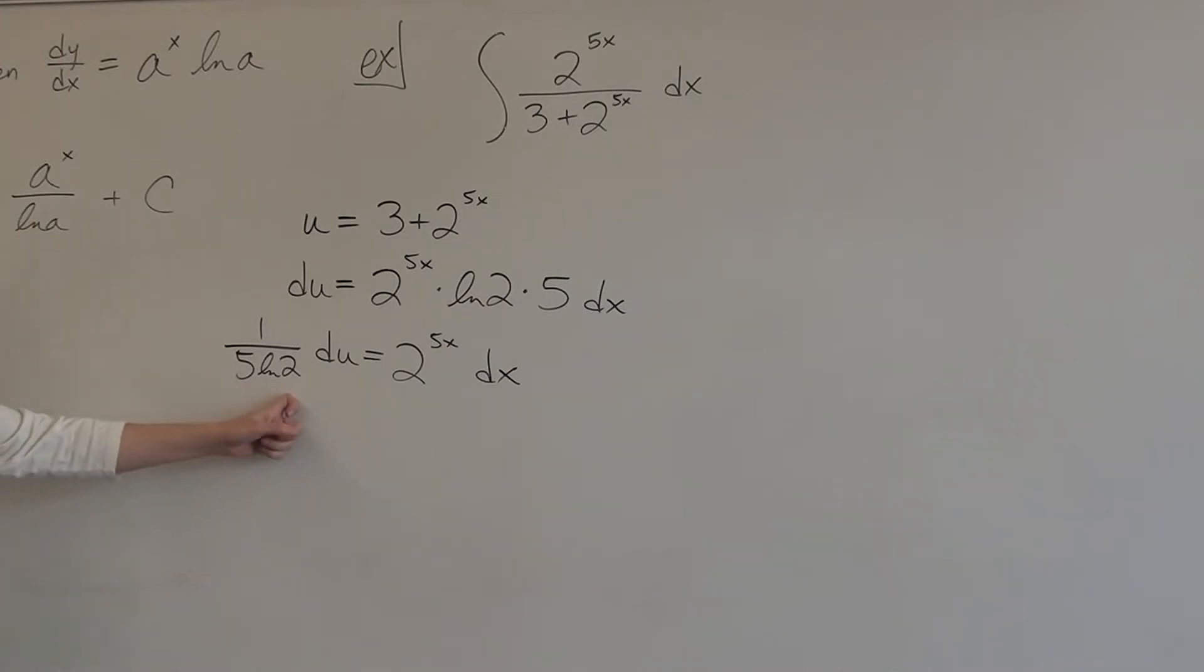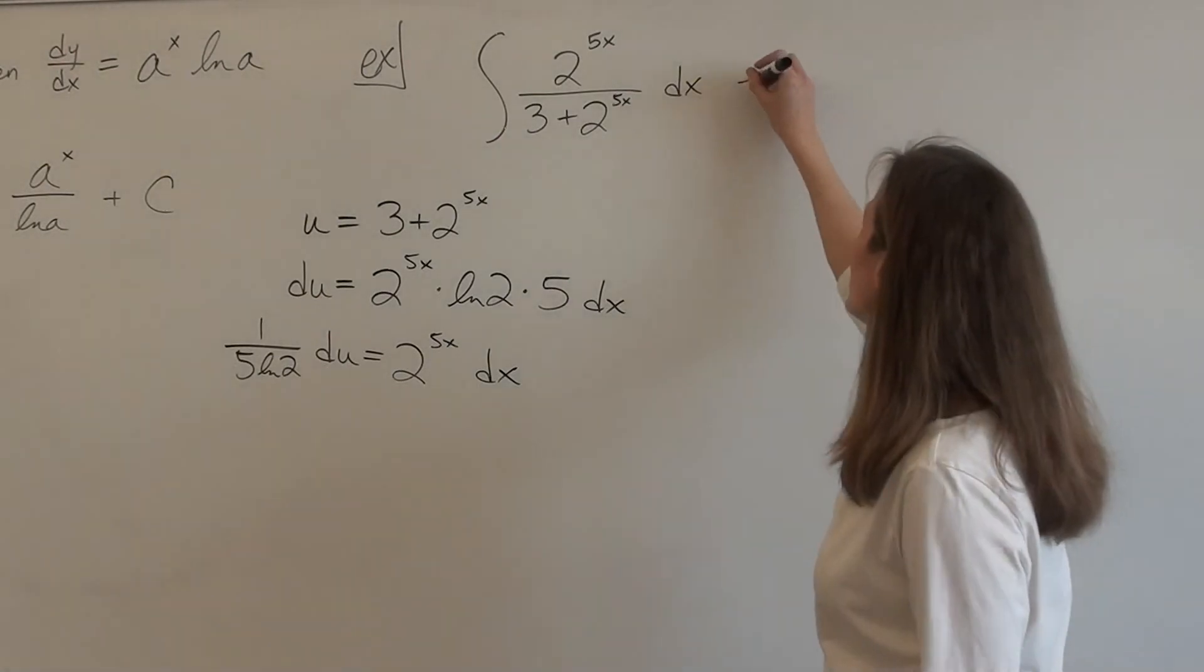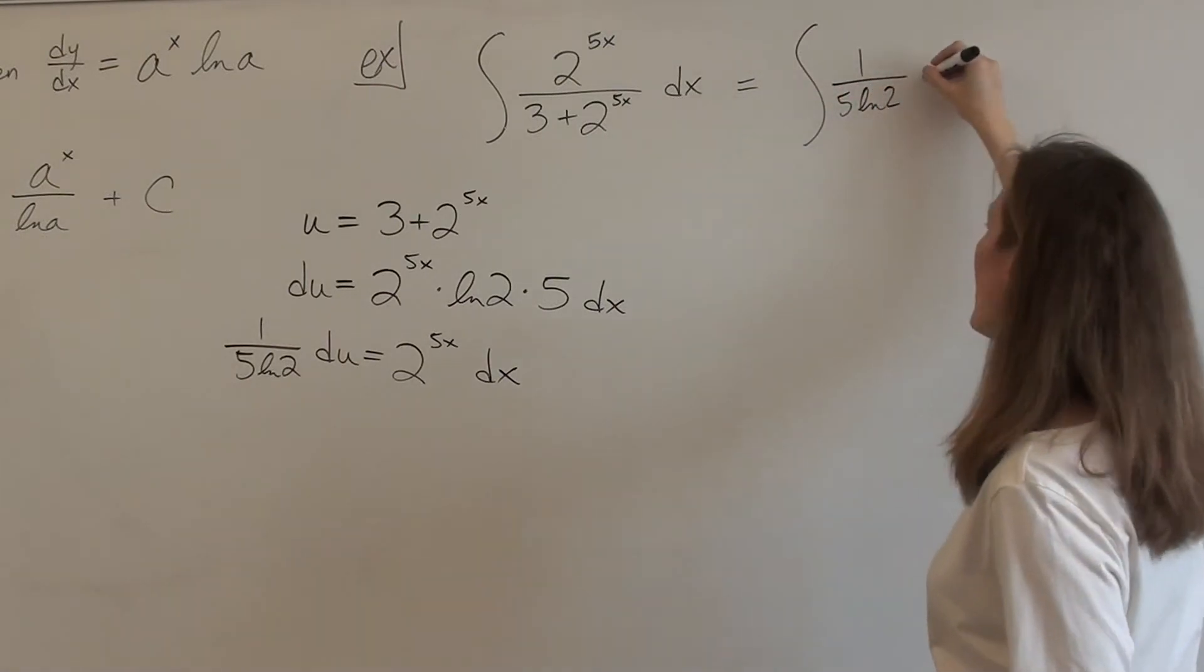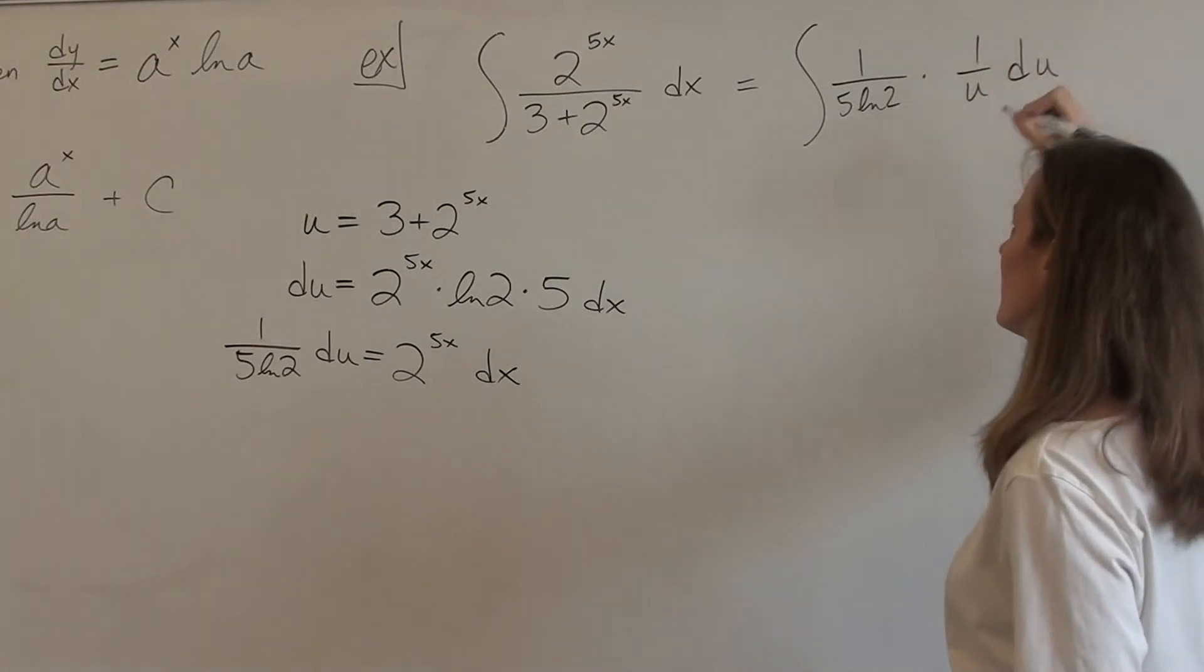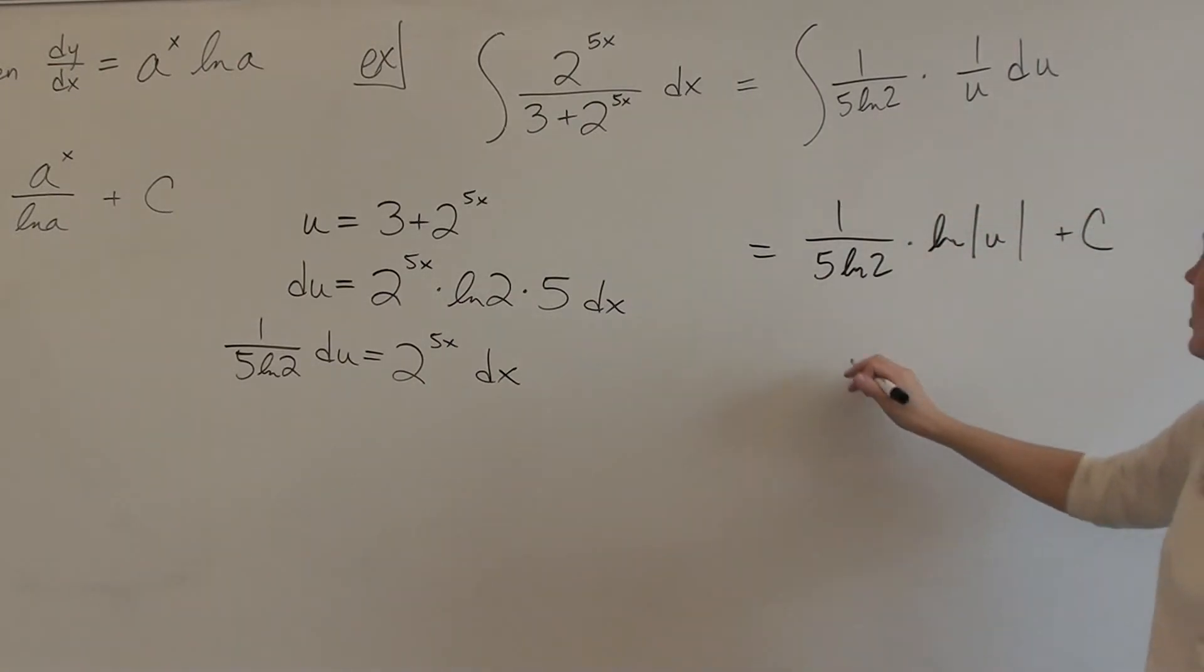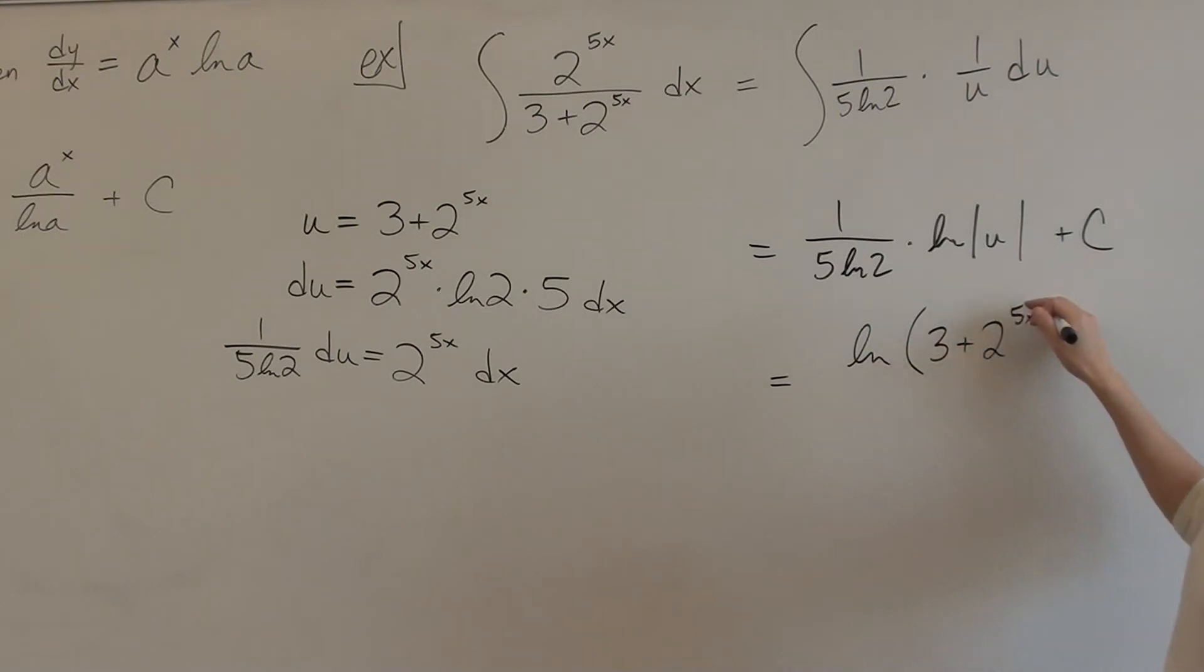So remember, ln of a number is a constant, right? It's not a variable. ln of 2 is a constant. ln of 5 is a constant. Those are all constants. So let's rewrite because this can get a little bit confusing. So we have 1 over 5 ln 2 times 1 over u du. Hmm. Could that go all into one giant ln? Like the denominator? 1 over u is 1 over u. 1 over u goes to ln u, right? So here's what we have. 5 ln 2 is just a coefficient. So this becomes ln absolute u plus C. So what you end up with is natural log of 3 plus 2 to the 5x over 5 ln 2 plus C.